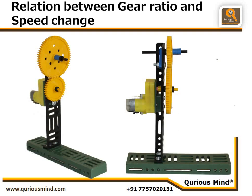Now what did we do? Let's understand that. This was how our windmill was and this is how our fan was — these are only the gear connections. For the windmill, the medium gear was on the motor shaft and the big gear was on the axle to which we had attached the blades. For the fan, the big gear is on the motor shaft and the medium gear is on the axle where we attach our blades.